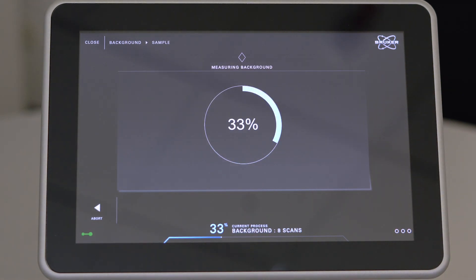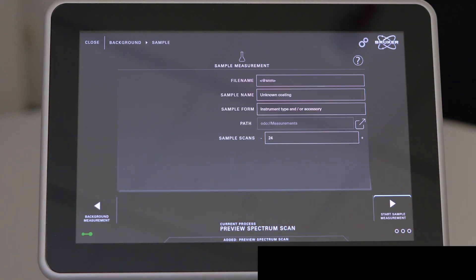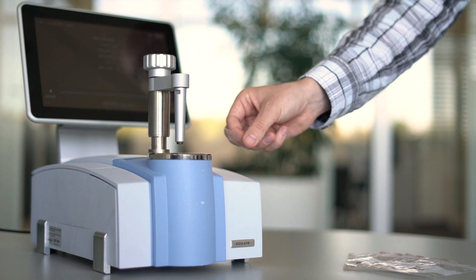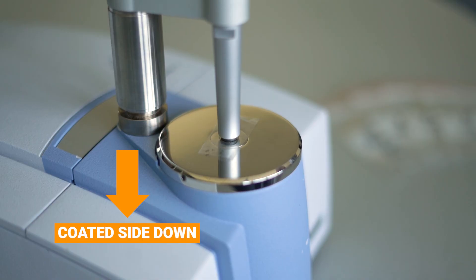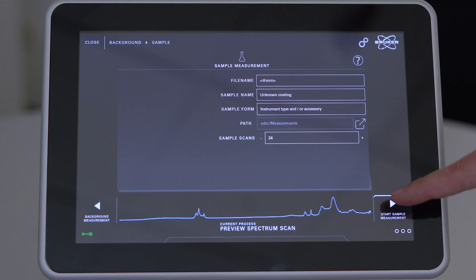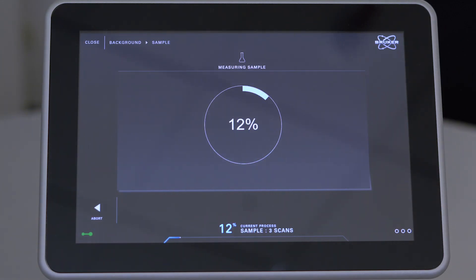But first, we take a background measurement. To analyze the coating on this snippet, we place it with the coated side down on the ATR crystal. Next, we start the FTIR analysis by clicking Start measurement in the software.